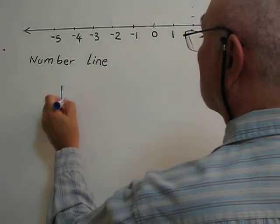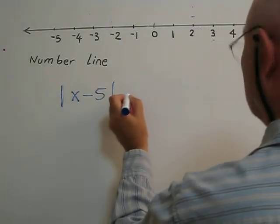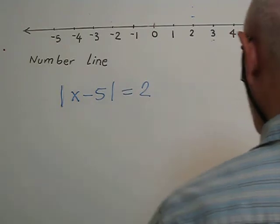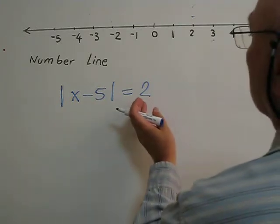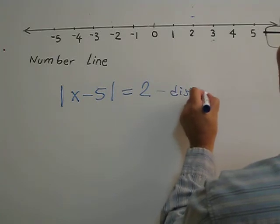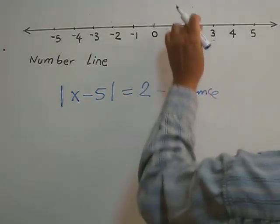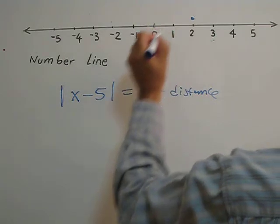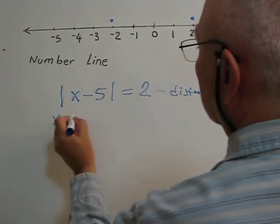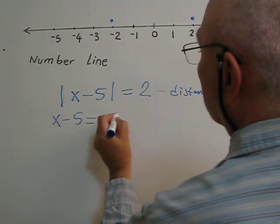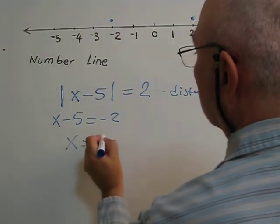Absolute value of x minus 5 equals 2. This means the expression x minus 5 must be 2 units away from the origin. Two units away from the origin gives two locations: positive 2 and negative 2. For the negative location: x minus 5 equals negative 2, so x equals positive 3. For the positive location: x minus 5 equals positive 2, so x equals 7.